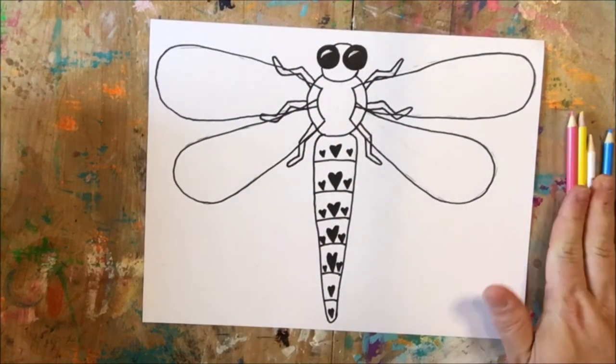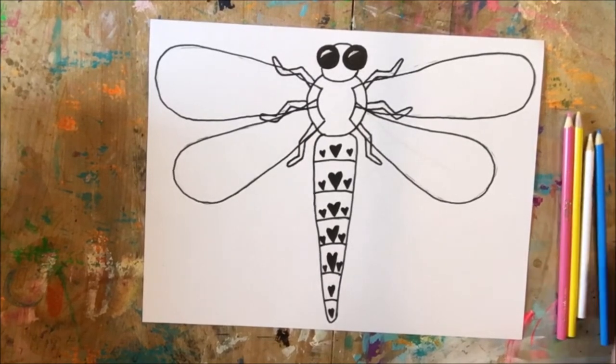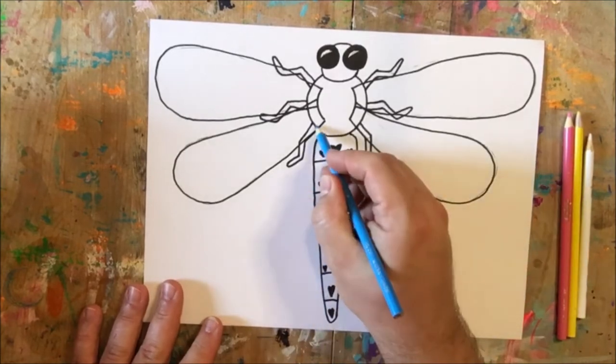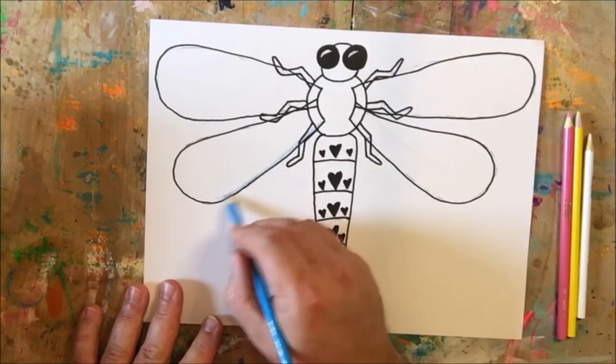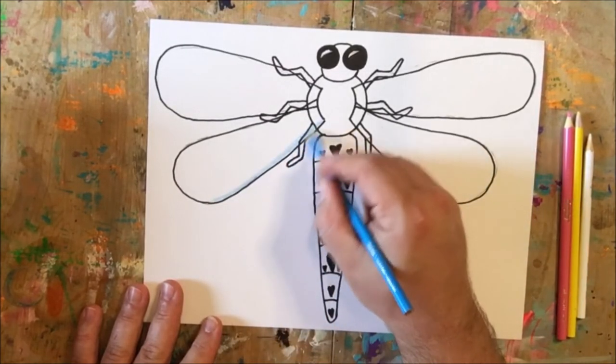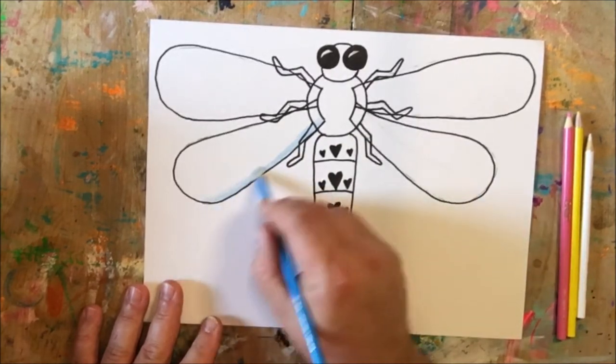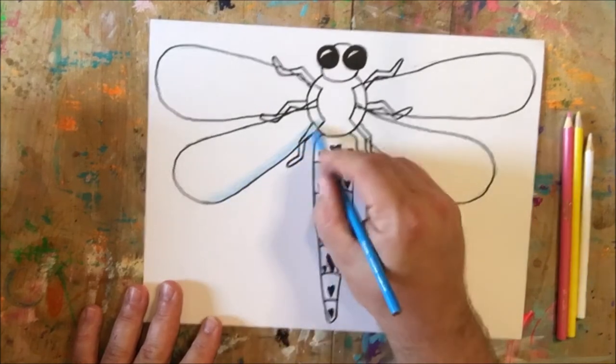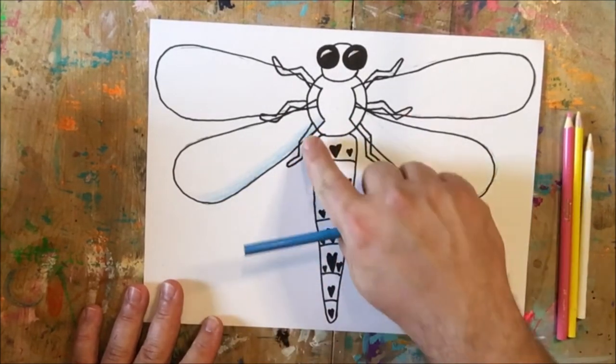To get started, like I said, I'm going to be using blue and yellow and pink. I'm going to start with blue. You could really start with whatever color you'd like. And I'm just going to kind of roll along the edge of my wing like this. And I'm not going to put a lot of pressure on my wing at all.